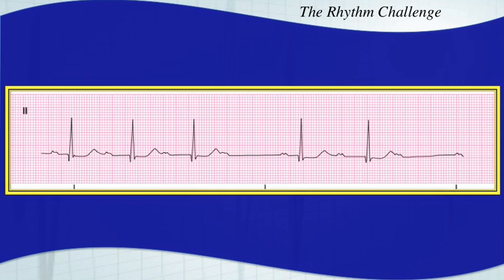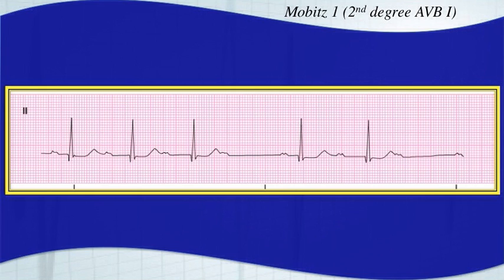Here's your next one. Take a good look at it. This rhythm is Mobitz I, or second degree type I, or Wenckebach. You see you have a PR interval that is prolonging — going, going, going — and then you have a P wave without a QRS complex. So going, going, going, gone. That is Mobitz I, or second degree type I.